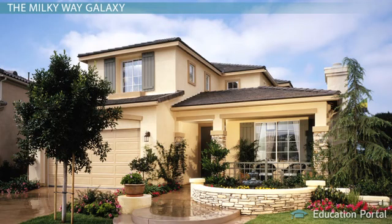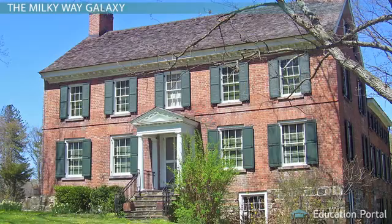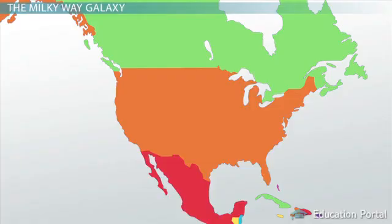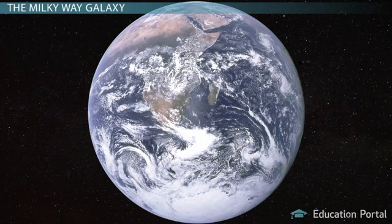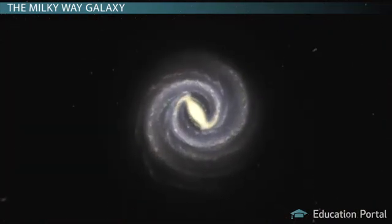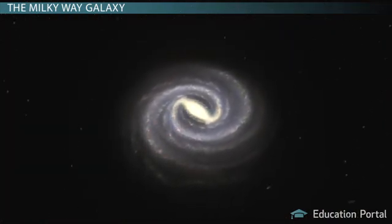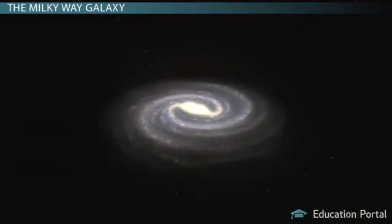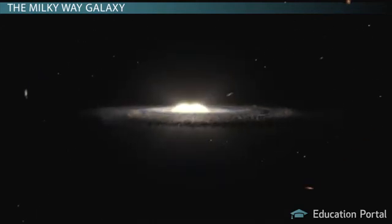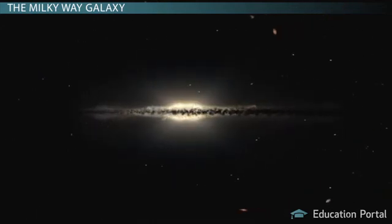You know the structure of your home — maybe it's made of brick, maybe it's a split-level home. You even know the outline of your city and the boundaries of your country. You can use a satellite to see our Earth from a distance. But we have no way of seeing our galaxy from far away. So what's the structure of something we can't see from afar, something we are immersed within? What's the structure of our galaxy?